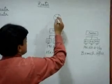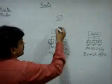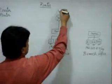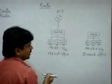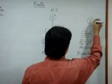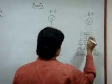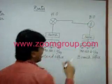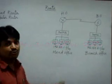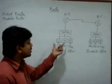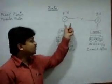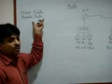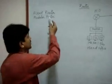We need one router for the head office and one router for the branch office. We connect each LAN to its respective router, and then connect the two routers through a WAN link. We will see in detail what types of WAN links are available. Like this, we can connect one office to another with the help of routers. Routers are classified into two types: fixed routers and modular routers.